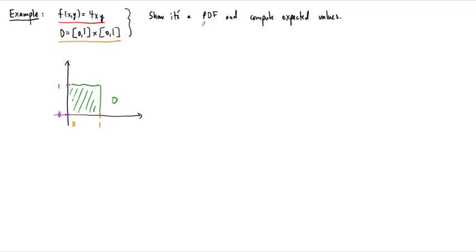We want to show that this function on this domain is a probability density function, and then compute the expected values. So step 1: we need to check that our function is continuous. It's given by a polynomial, so it's continuous.